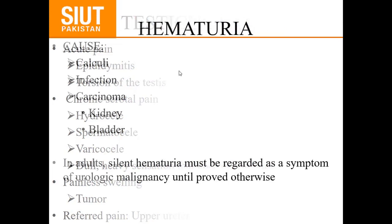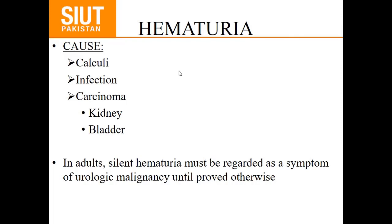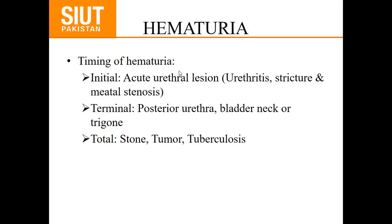Hematuria. Causes include stone, infection, or carcinoma — usually from the bladder or kidney. In adults, silent hematuria must be regarded as a symptom of urologic malignancy until proved otherwise. Timing of hematuria is also important: initial hematuria is due to acute urethral lesion — urethritis, stricture, or meatal stenosis. Terminal hematuria is due to posterior urethra, bladder neck, or trigone. Total hematuria is from tumor, stone, or tuberculosis.